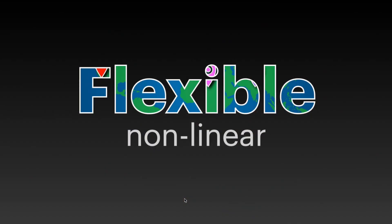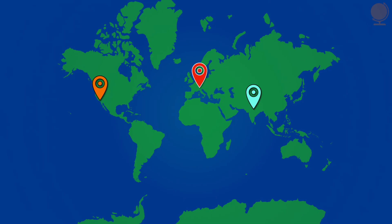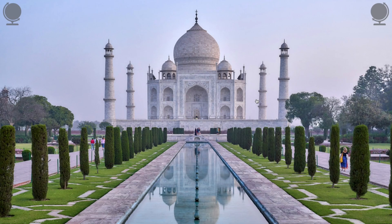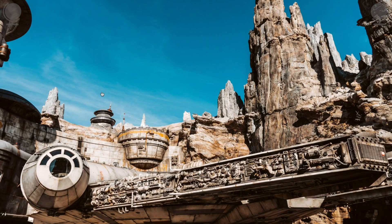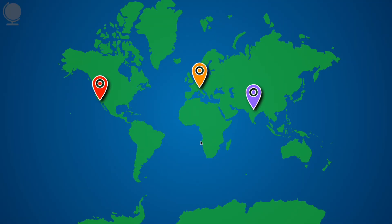There are also flexible or non-linear ways to create these presentations. In this version you have images or shapes on screen and you want to go to a specific part of your presentation but you don't have to go in order. Your audience can pick where to go. For example, we have three locations — you can click on the flag over India and go right to the Taj Mahal, use the shape to go back to the home screen, choose Galaxy's Edge in Southern California, or click an icon to reach your final screen.